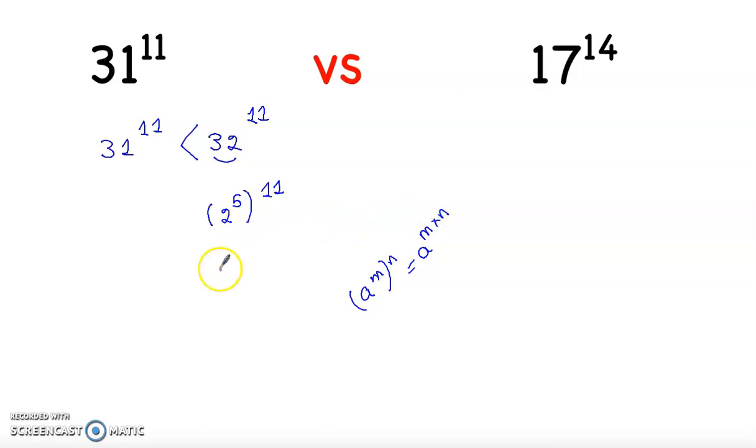So it equals 2 to power 5 times 11, which is 55. Therefore, 31 to power 11 is smaller than 2 to power 55.